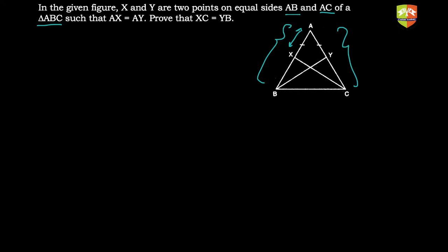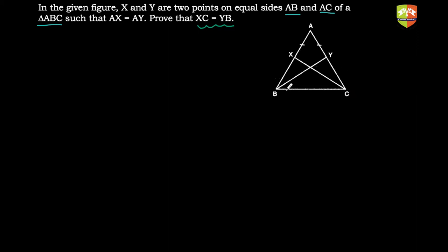Let's begin and understand how we can prove this. We have to prove that XC is equal to YB. As I told you in previous sessions, let's work backwards — assume XC equals YB is true. What else is given? AB is equal to AC, which means the base angles are definitely going to be equal.